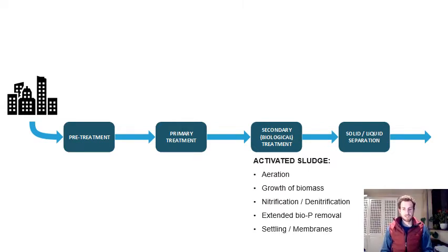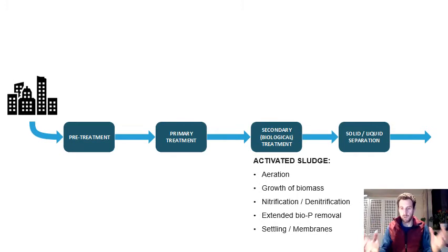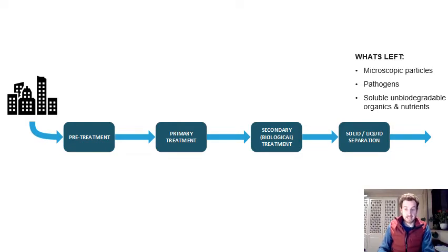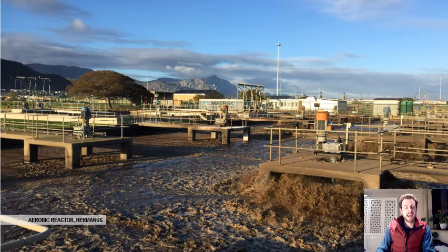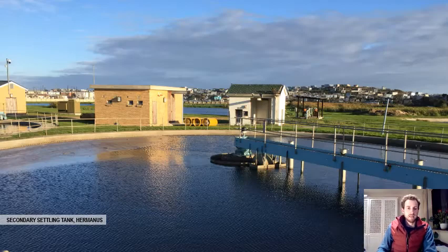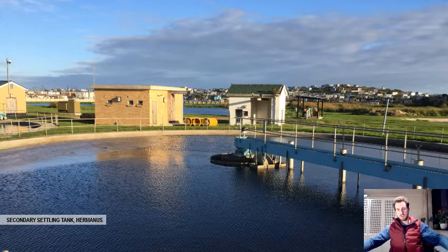The secondary biological treatment step is the activated sludge process. We grow biomass, remove nitrogen by converting it to nitrogen gas, and fix the phosphorus in the water. We're creating an environment full of biology that takes out all the organics and nutrients. Thereafter, we settle the wastewater or use membranes to separate it. Here's an image of an aerobic reactor — you can see the mixers churning the water and pushing oxygen into it. And here's a secondary settling tank — a big circular tank where water comes in the middle, flows to the outside, sludge settles, and water overflows.